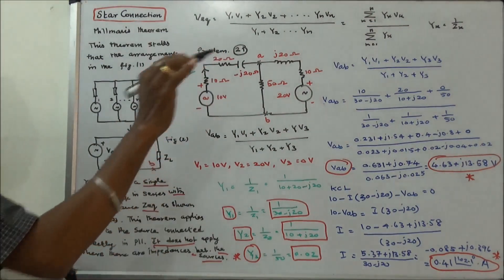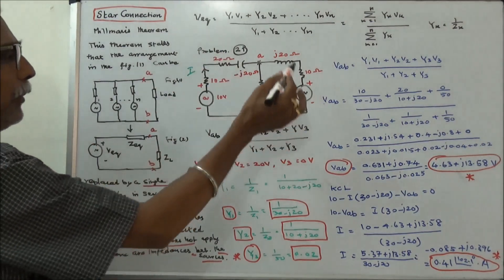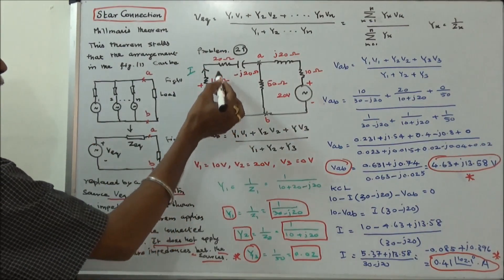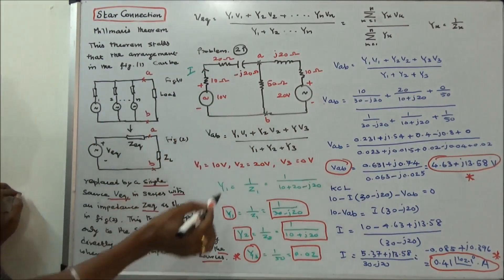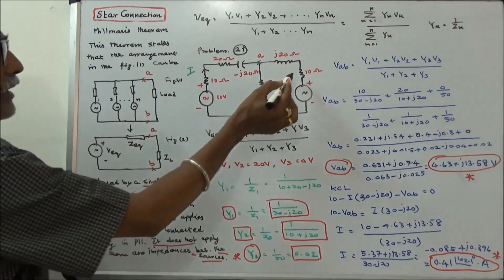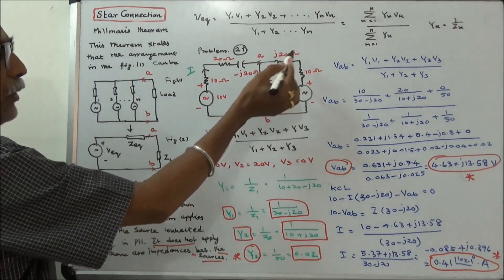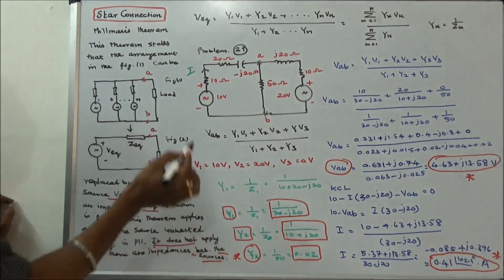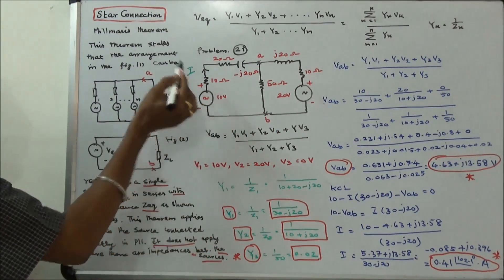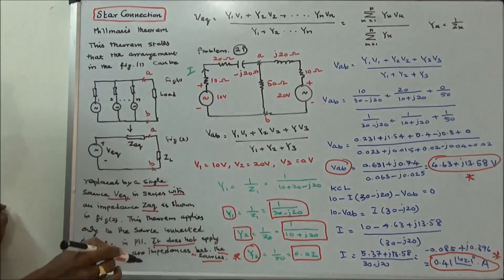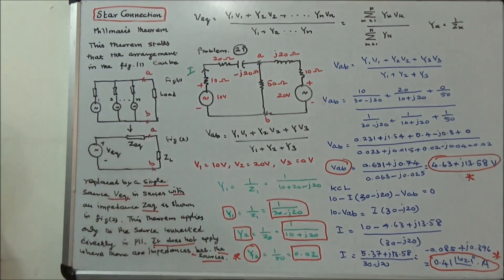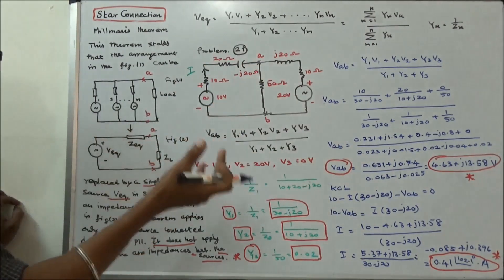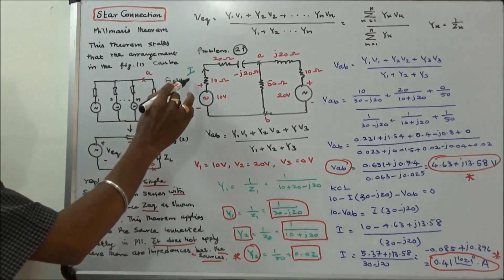Let me work out one problem. The given circuit has impedances: 30 minus J20, 10 plus J20, and 50 ohms. The question is to calculate the current i. To do this, we first calculate Vab, and once we have Vab we can easily calculate the current i.